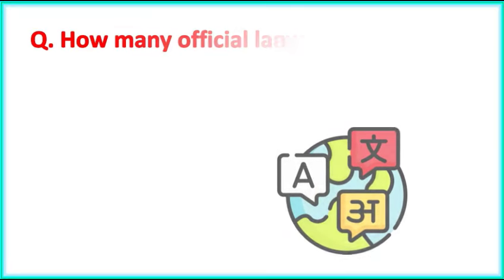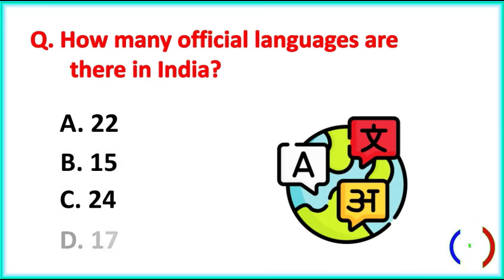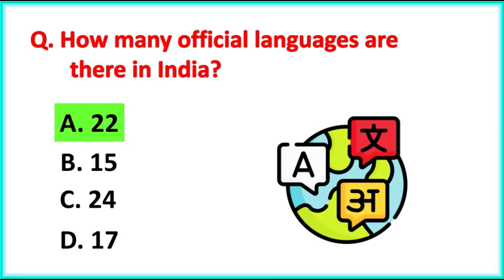How many official languages are there in India? The correct answer is option A: 22 languages.